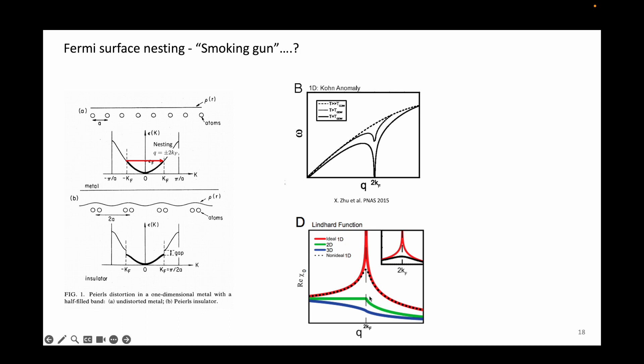The q equals 2kf condition is called the Fermi surface nesting condition, or simply the nesting condition. It refers to the translational invariance of the q equals 2kf vector in highly anisotropic systems such as 1D metals.